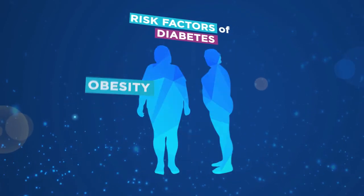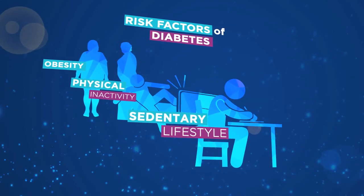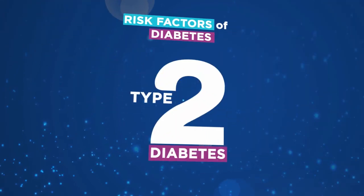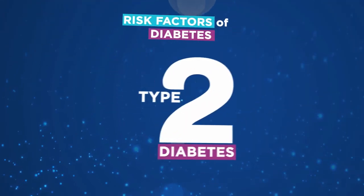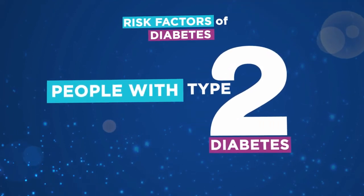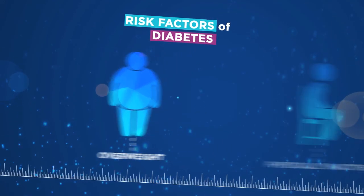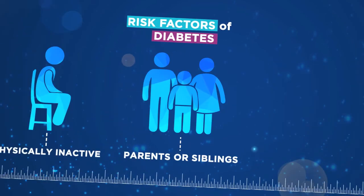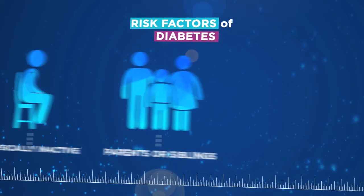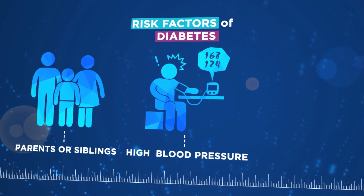obesity and physical inactivity and a sedentary lifestyle result in type 2 diabetes. You are at risk of type 2 diabetes if you are overweight, physically inactive, have parents or siblings with diabetes, high blood pressure, or polycystic ovary syndrome.